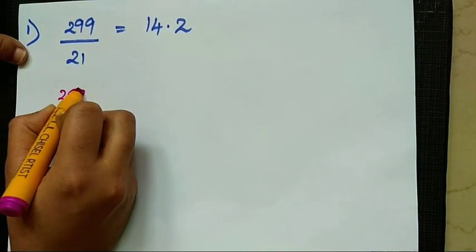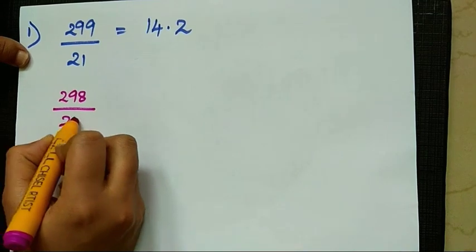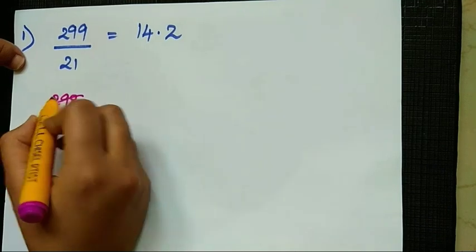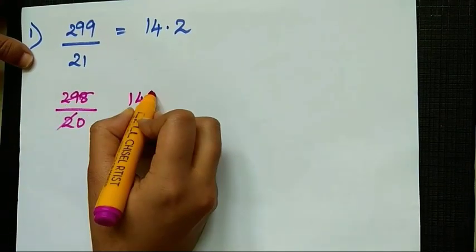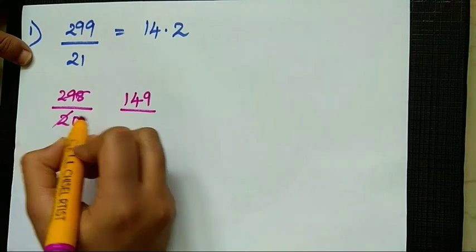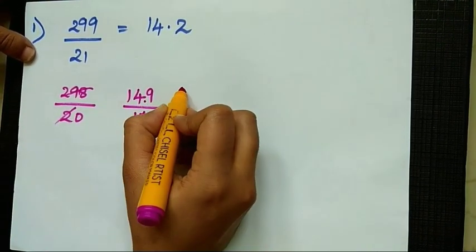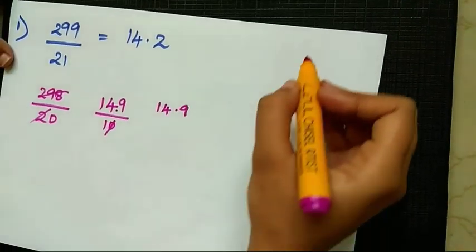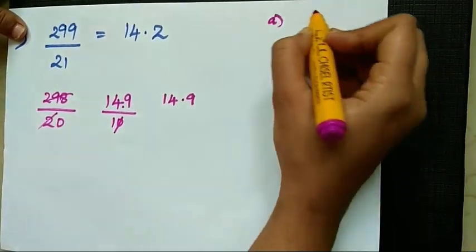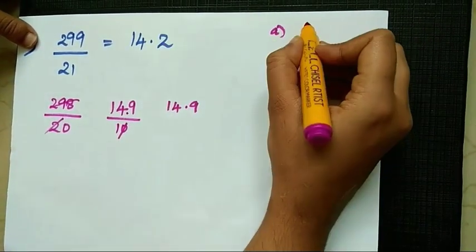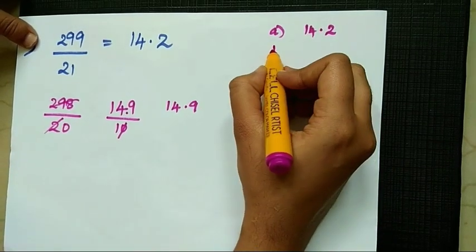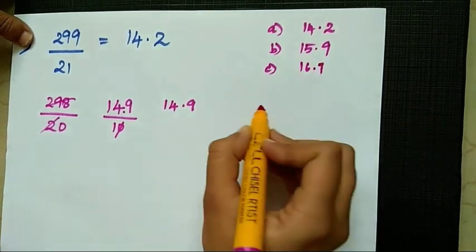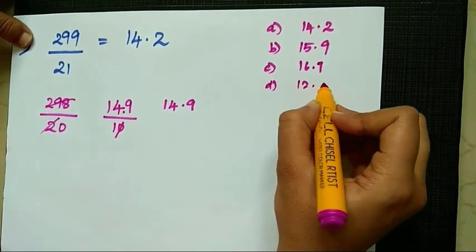The answer is 298 by 20. Now we will divide easily. The approximate answer is 14.9. Suppose in the exam the options appear: Option A is 14.2, Option B is 15.9, Option C is 16.1, Option D is 12.3.